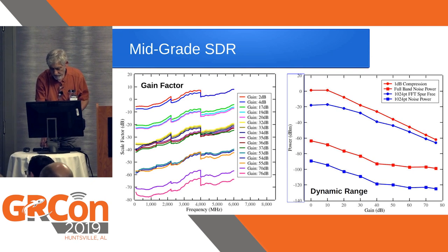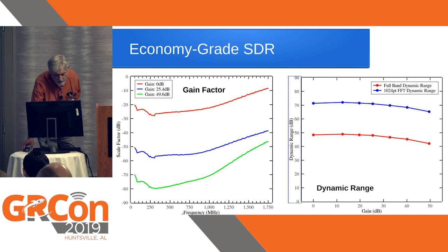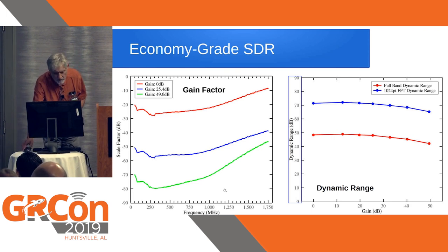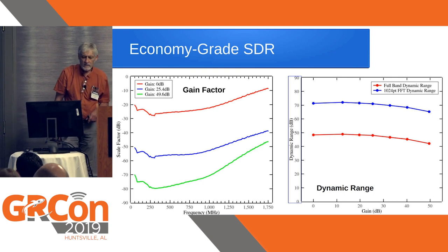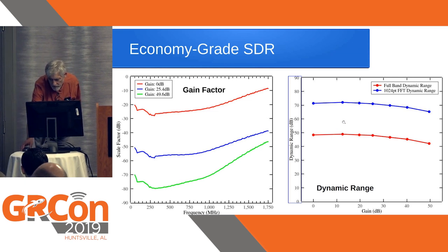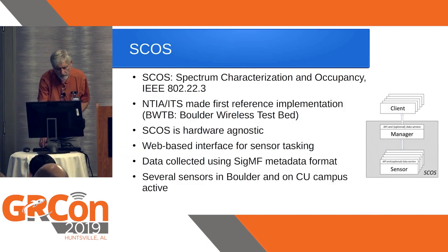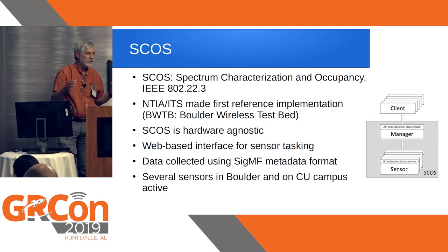Here is an economy-grade SDR — essentially one of those RTL SDRs — that only goes from 100 MHz to about 1.7 GHz. The gain factors are shown for three gain settings. As frequency increases toward the upper end, the gain of the device goes down, so the gain factor calibration increases. The dynamic range is a little less than 50 dB, consistent with an 8-bit ADC converter.